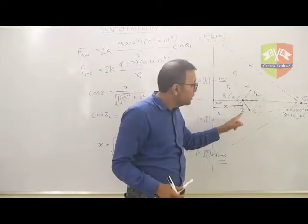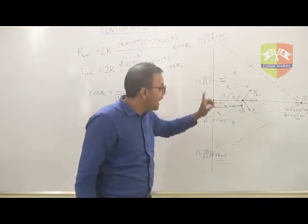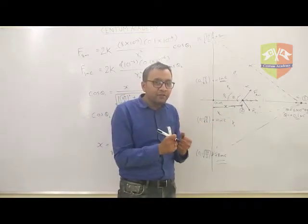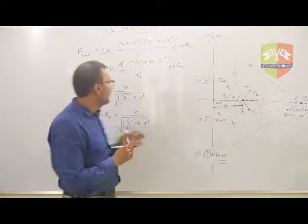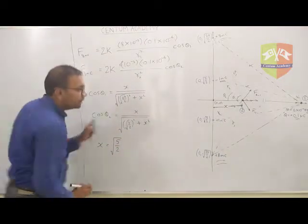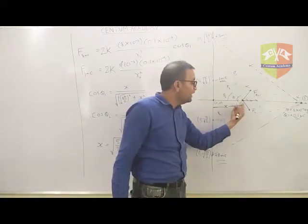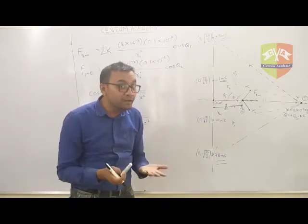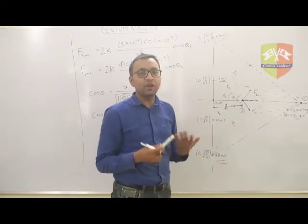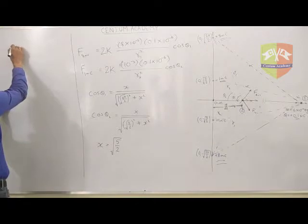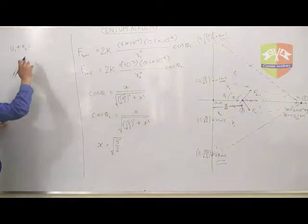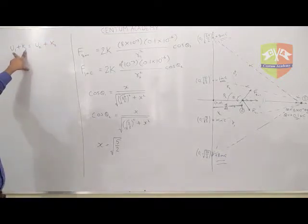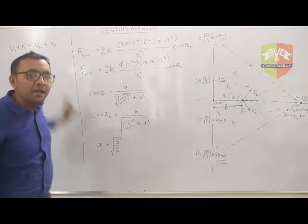So at x = √(5/2), if the velocity goes to zero there, after that point the system will pull the 0.1 microCoulomb charge towards the origin and it will cross. That is the minimum velocity condition. We now have two critical points: one when the charge is at infinity and the other at distance √(5/2) from the origin. We can apply conservation of energy: if there are no external forces, kinetic energy plus potential energy initially equals kinetic energy plus potential energy finally.